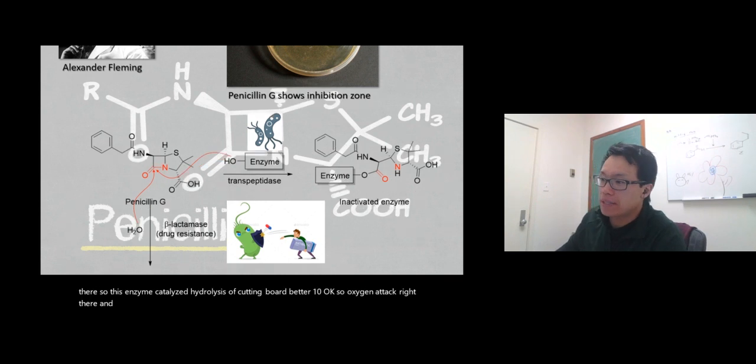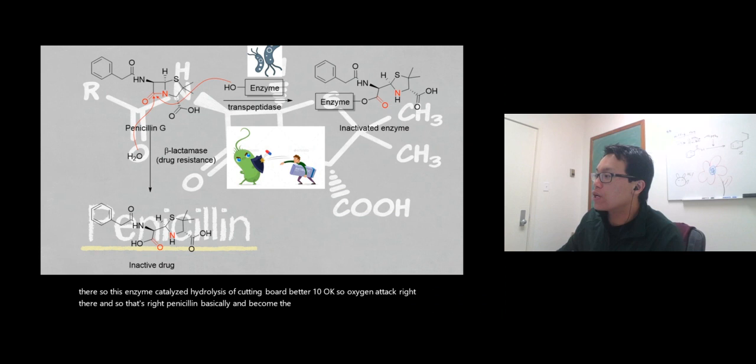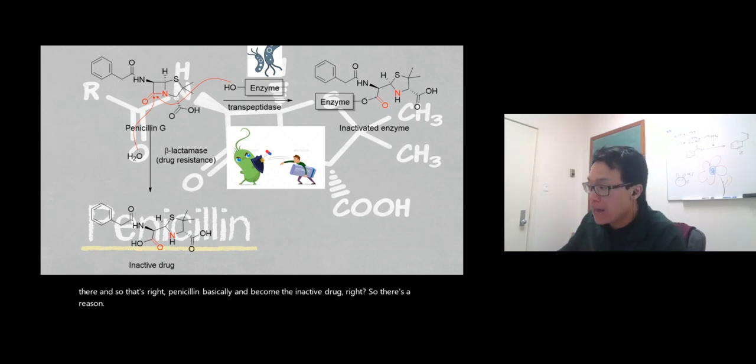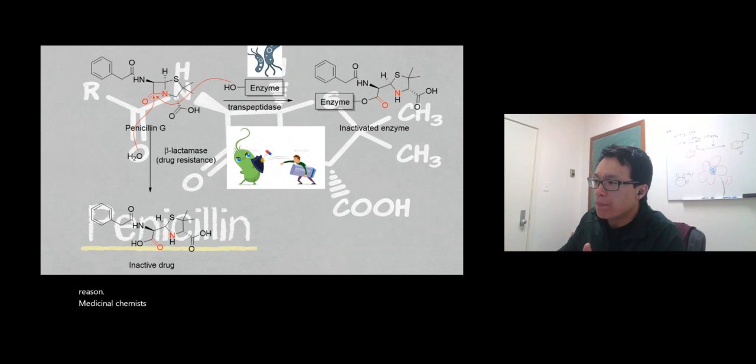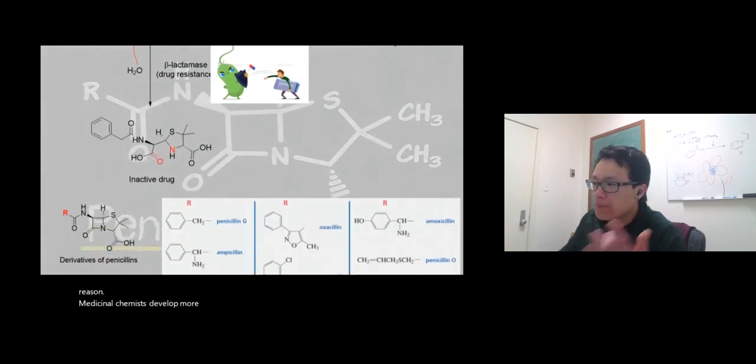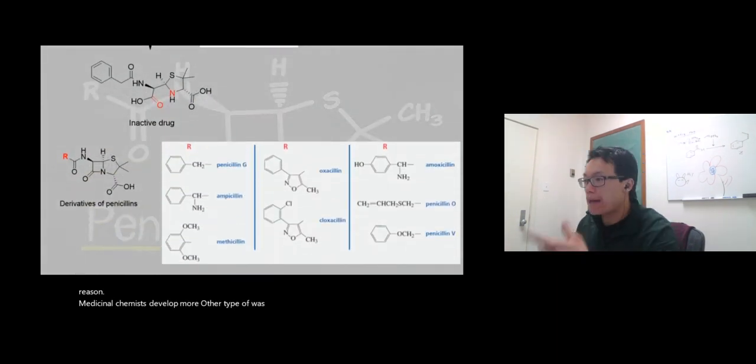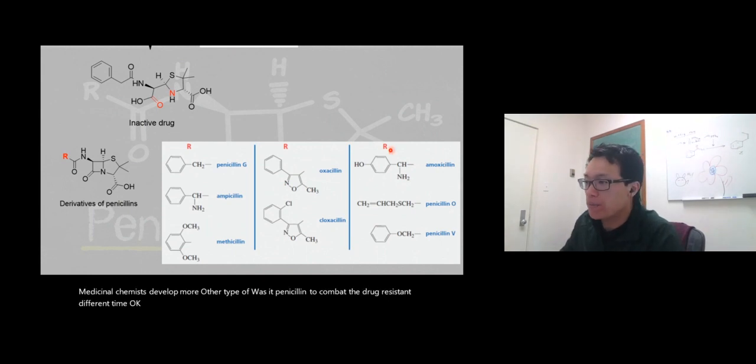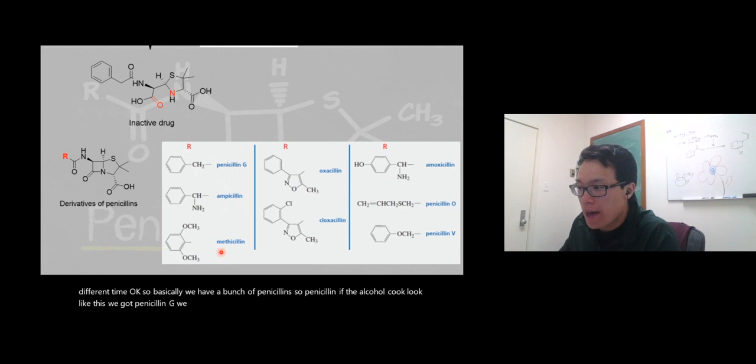So that's the reason medicinal chemists developed more other types of penicillin to combat the drug resistance of this enzyme. We have a bunch of penicillins: if the alkyl group looks like this we call it penicillin G, we have ampicillin, we have methicillin, and we have some other penicillin-type drugs as well.